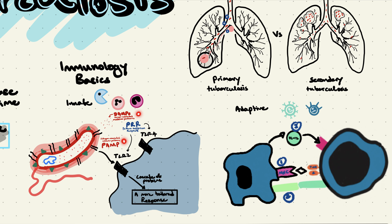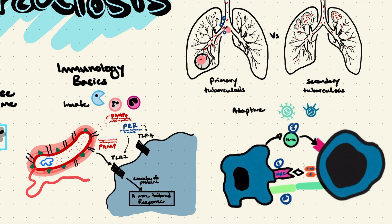The innate immune system needs a different response to viruses, extracellular bacteria, and intracellular bacteria — it responds differently depending on the type of threat. You might think the innate immune system is supposed to be non-specific while only the adaptive response is specific. Well, that was our initial understanding, but we've come to understand that the innate immune system is not as non-specific as we once thought. Although it is not nearly as specific as the adaptive immune system, it does manage to produce a more tailored response.